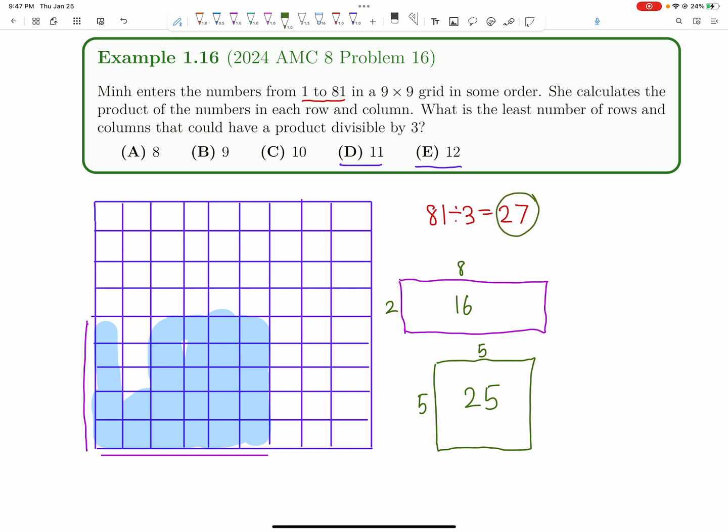But we have 27. So if the maximum number of squares that 10 total rows and columns can have is 25, and we have 27, then clearly this is not possible. And the same goes for anything smaller, because the maximum number of squares for a total of nine rows and columns and a total of eight rows and columns is even smaller. So therefore, our answer is 11. And this was quite a tricky problem, in my opinion, especially for number 16.